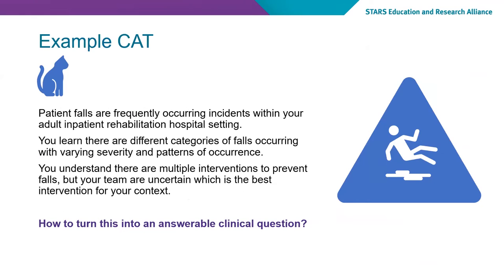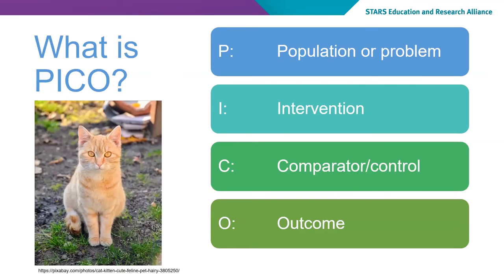Let's look at an actual example. Here's the scenario: patient falls are frequently occurring incidents in your adult inpatient rehabilitation hospital setting. You learn there are different categories of falls occurring with varying severity and patterns of occurrence. You understand there are multiple interventions to prevent falls, but your team are uncertain which is the best intervention for your context. This is where the PICO mnemonic can be really useful. PICO is short for population or problem, intervention, comparator or control, and outcome.